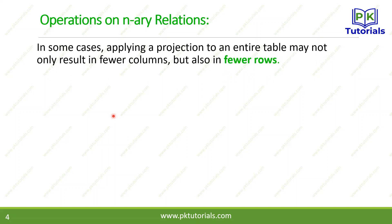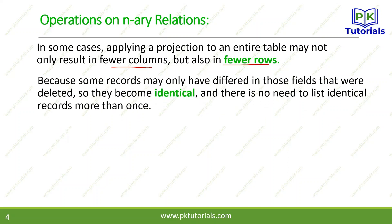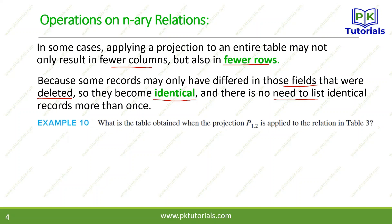In some cases, applying projection to an entire table may result not only in fewer columns but also in fewer rows. This happens because records that were different in the deleted fields may become identical after deletion. Because they are now identical (duplicates), they are automatically removed. This duplication removal does not affect the result, as we do not need those duplicates.